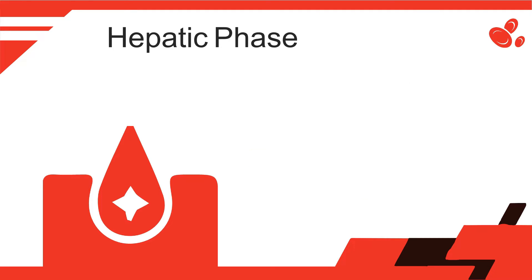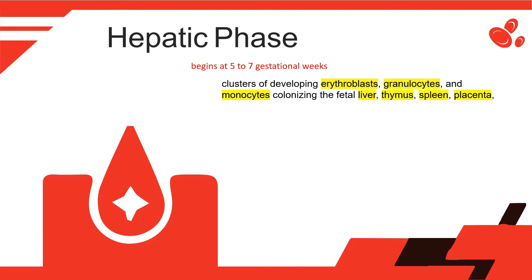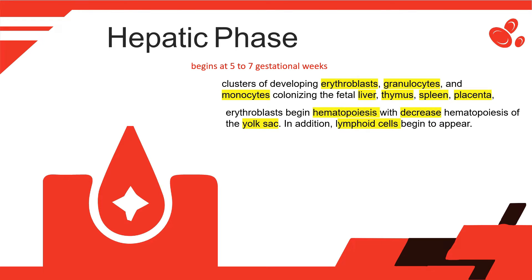Hepatic Phase: Begins at 5–7 gestational weeks and is characterized by recognizable clusters of developing erythroblasts, granulocytes, and monocytes colonizing the fetal liver, thymus, spleen, placenta, and then the bone marrow space. The developing erythroblasts signal the beginning of definitive hematopoiesis with a decline in primitive hematopoiesis of the yolk sac.